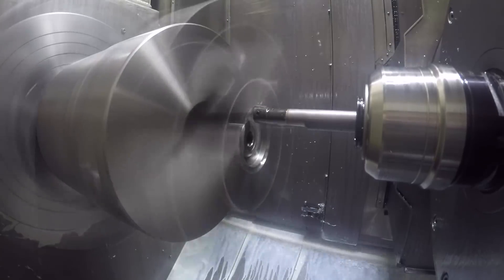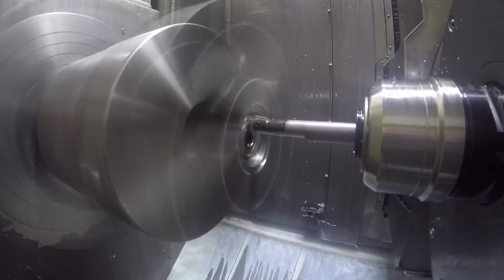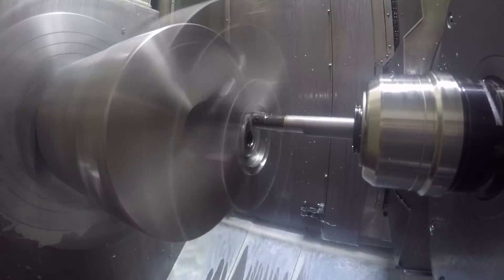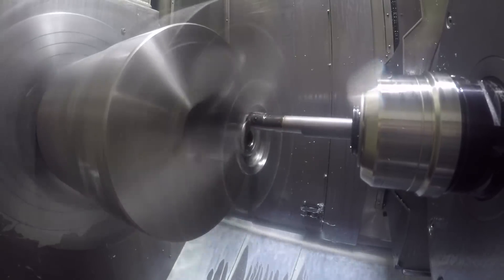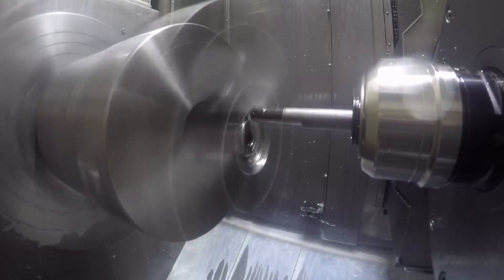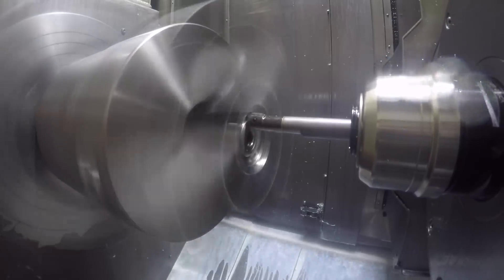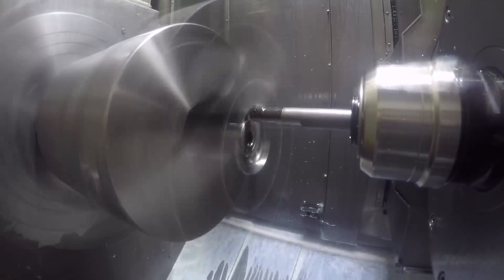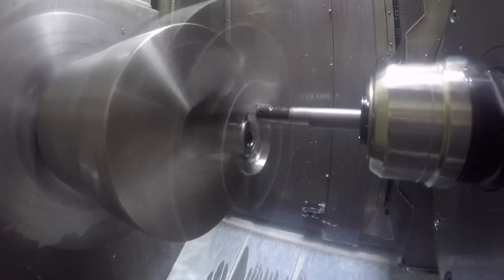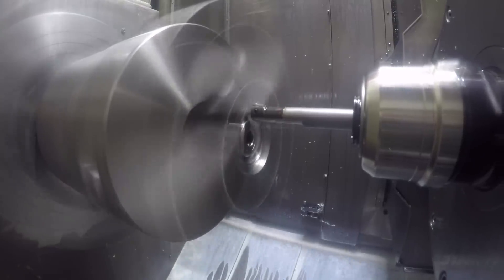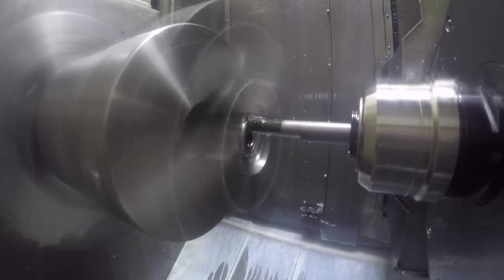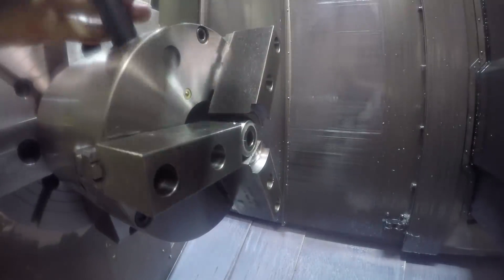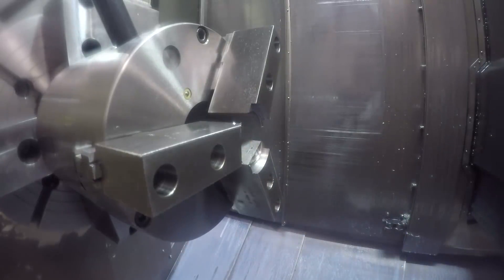This is just boring the jaws. I just did this manually, didn't even make a program. I just jogged the machine with the hand wheel to bore the jaws. I found a chuck nut on the bench to separate the jaws.